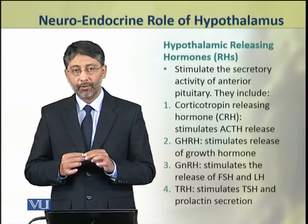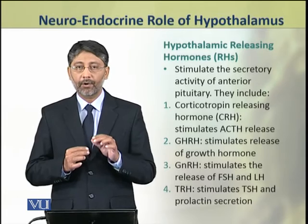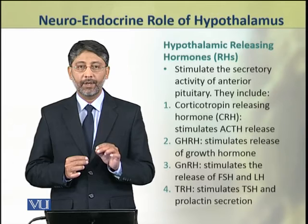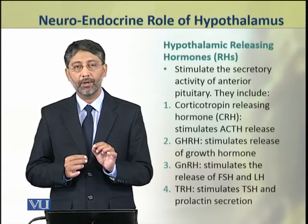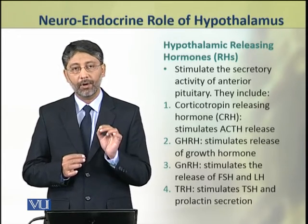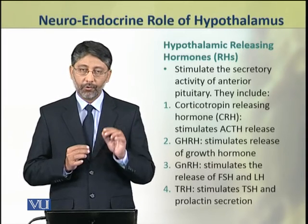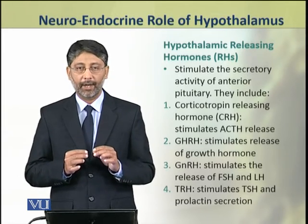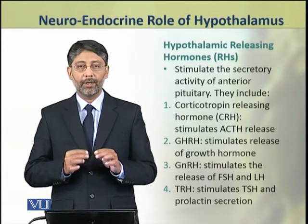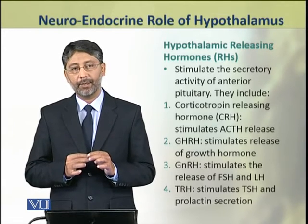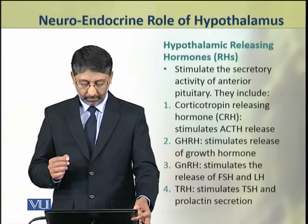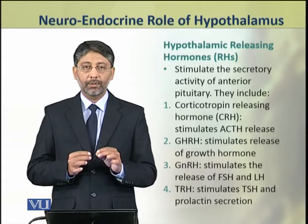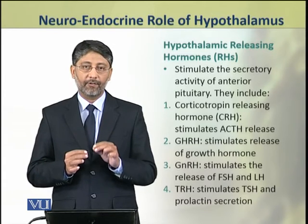The third hormone is the gonadotropin releasing hormone, which stimulates the release of FSH and luteinizing hormone from adenohypophysis. The fourth hormone is the thyrotropin releasing hormone or TRH, that stimulates the production of TSH from anterior pituitary. In addition to this, TRH also stimulates the secretion of prolactin.